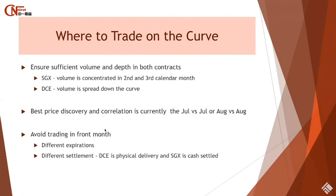To begin, let's look at where to trade on the curve. You need to ensure there's sufficient volume and depth in both contracts. On the SGX, volume is concentrated in the second and third calendar months. Currently the front month is June, so we should be looking at July and August as they have the largest volume. The DCE has sufficient liquidity in July and August as well. So currently the best price discovery and correlation would be to look at July versus July, or August versus August. You should avoid trading in the front month as they have different expiry dates and different types of settlements — DCE is physical delivery and SGX is cash settled.